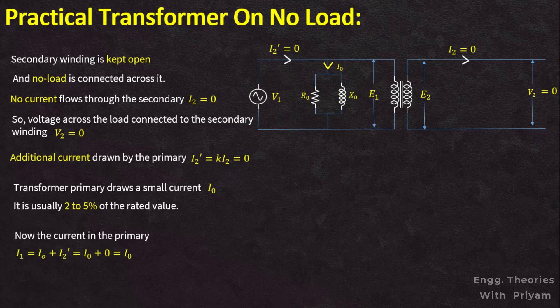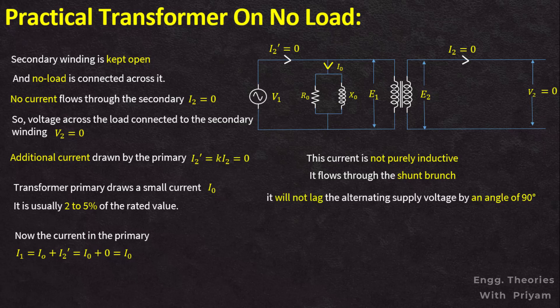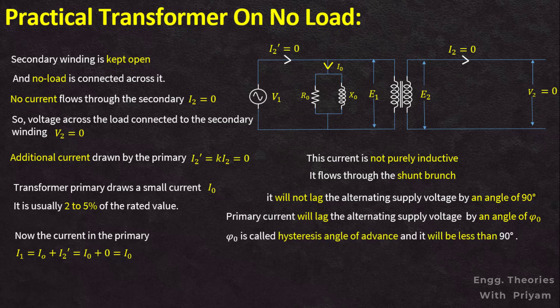This current I₀ is not purely inductive, as it flows through the shunt branch which consists of resistive and inductive components. That's why it will not lag the alternating supply voltage V1 by an angle of 90 degrees. As it is an RL branch, the primary current I₀ will lag the supply voltage V1 by an angle φ₀. This angle φ₀ is called the hysteresis angle of advance and it will be less than 90 degrees.